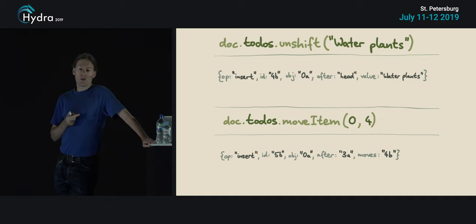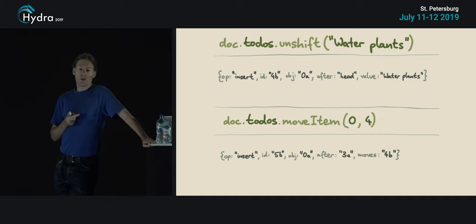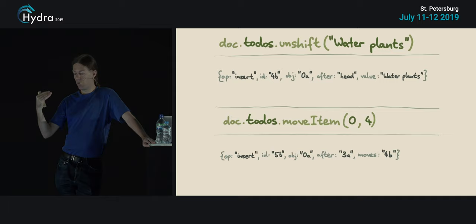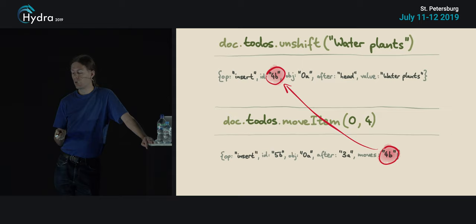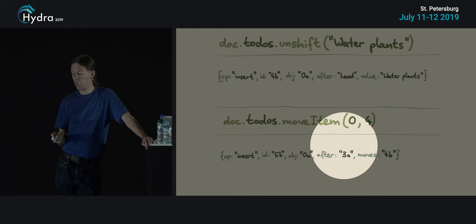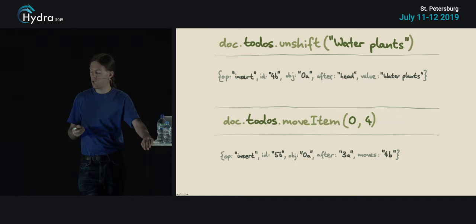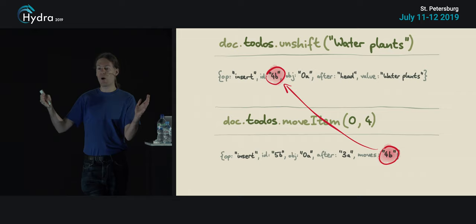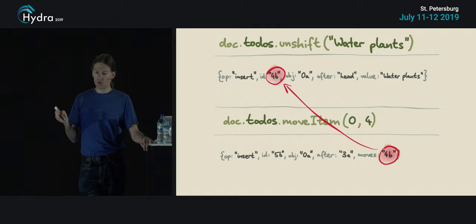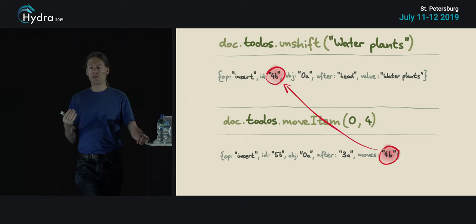For inserting a new item at the top of a list, we use the JavaScript .unshift method, which again maps to an insertion operation. We can represent insertion at the beginning by saying we insert after 'head' — a special value meaning 'right at the beginning'. We can also consider moving items around — for drag-and-drop reordering in a to-do list, we express this with an insertion operation that says what is the new place and references the moved item's ID. This is the mechanism for implementing reordering and drag-and-drop on these kinds of lists.